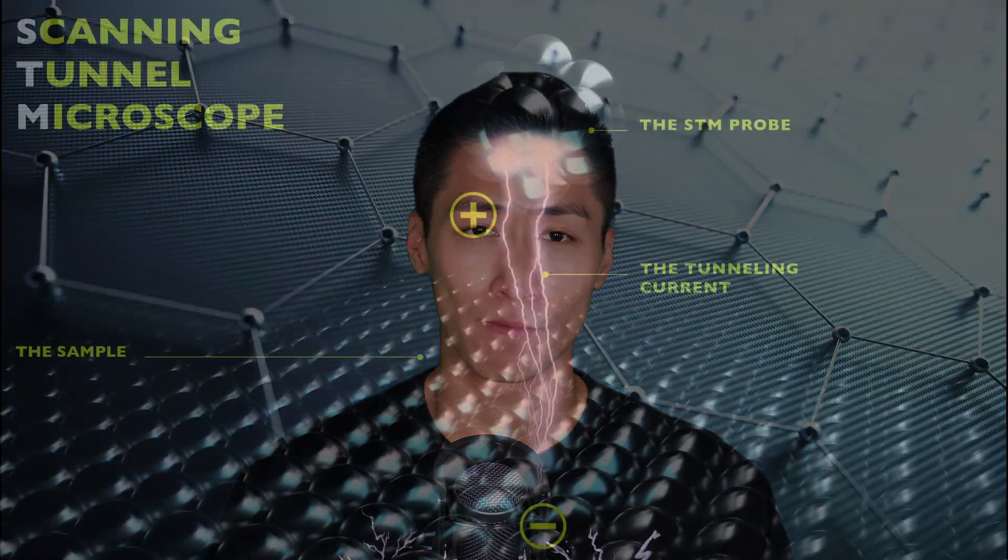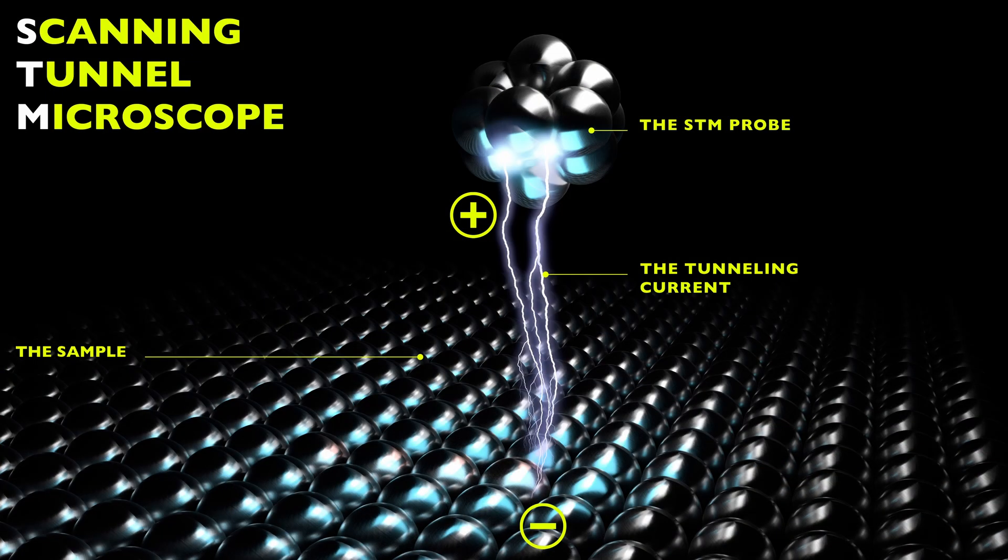An STM tip is made to be about 1 atom wide and brought very close to the sample surface, about 1 nanometer. At this close, electrons from the sample can actually quantum tunnel to the tip.